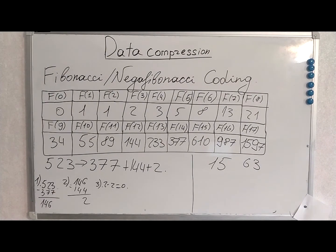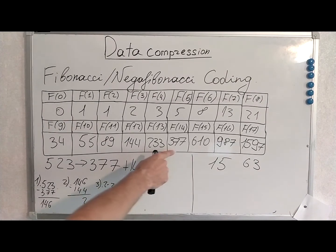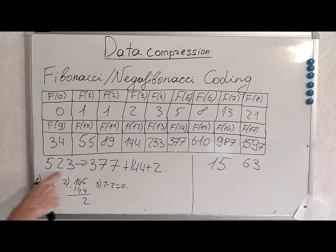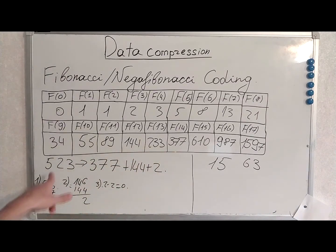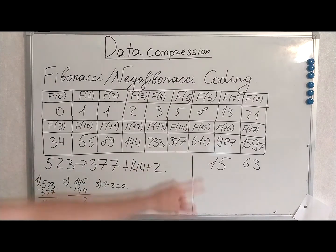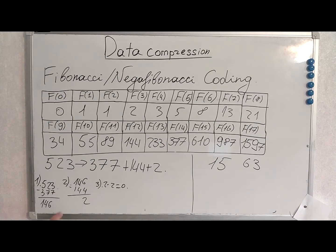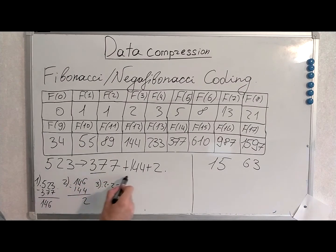523 is a slightly more complicated example. Again, we look for the biggest Fibonacci number in the sequence which is still smaller than 523. We subtract that biggest Fibonacci number from 523. Then we continue with the remainder, which is 146. We subtract 144, producing 2. This is the Zeckendorf representation of 523.